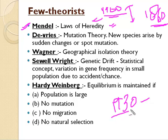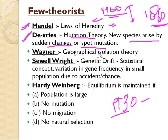The second theorist is Hugo De Vries. He gave the mutation theory. According to the mutation theory, there are sudden changes in our genetic pool — genes suddenly change, and new species arise by these sudden or spot mutations. Immediate changes occur due to some factors, either environmental or natural. This is known as the mutation theory, given by Hugo De Vries.